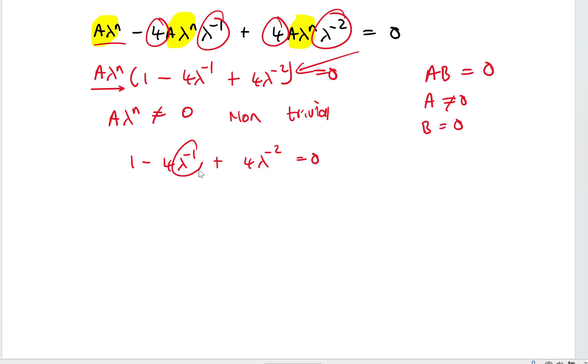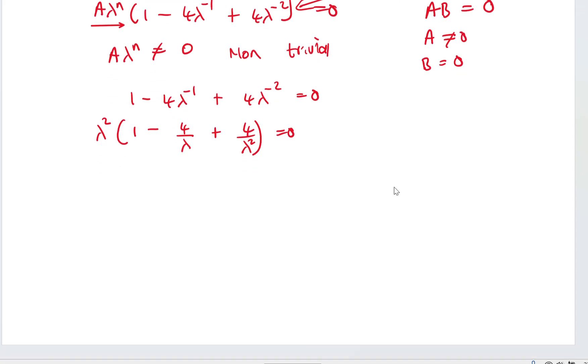So let's put this to the bottom since it has a negative sign. It's going to be 1 minus 4 over lambda plus 4 over lambda squared is equal to 0. I'll multiply all the terms by lambda squared. If I do that, I'm going to have lambda squared minus 4 lambda plus 4 is equal to 0.